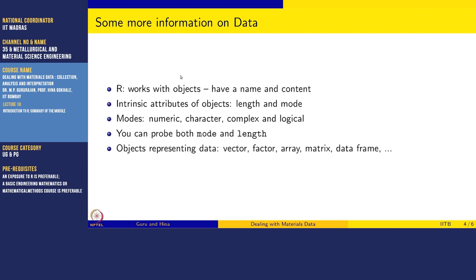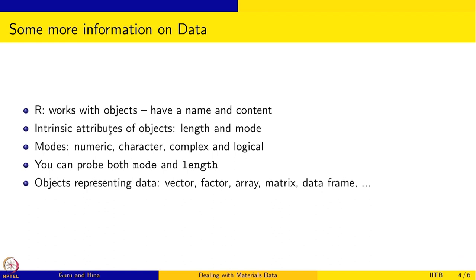There are some more aspects that have been left out, and I recommend that you read more about them with the available material online. R works with objects, as you have noticed, and each of these objects has a name and content. For example, a variable like element or x has some content — say, 15 observations and 4 variables.